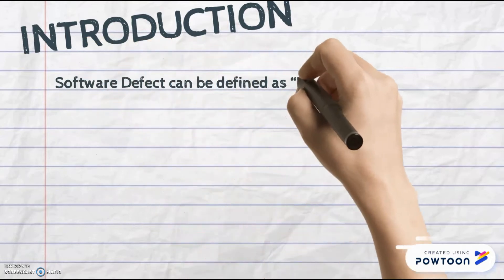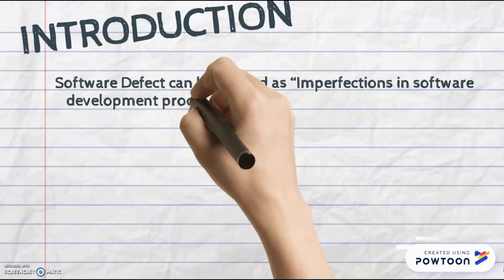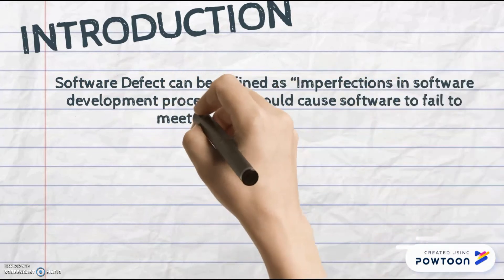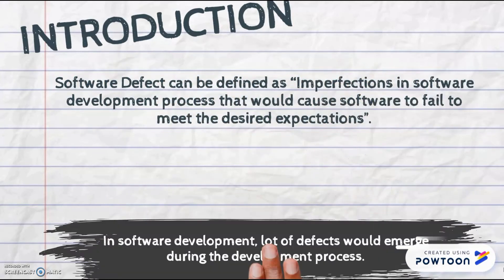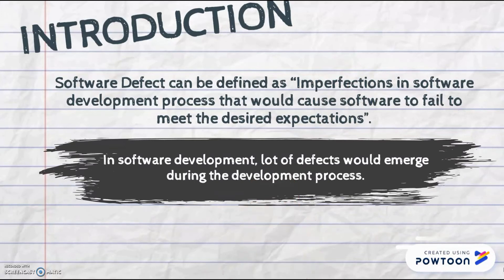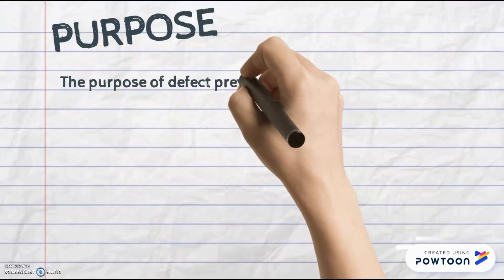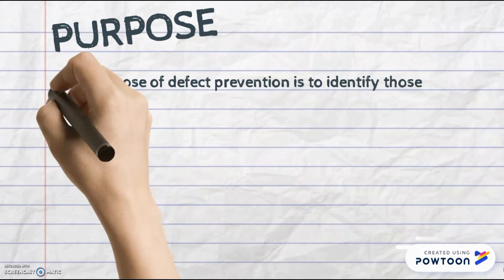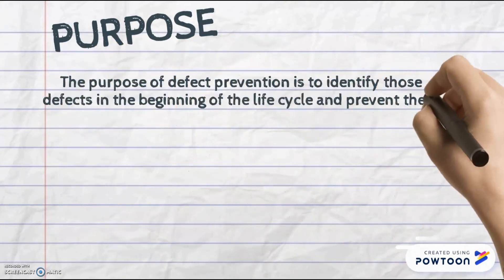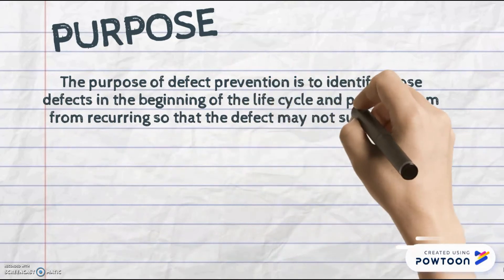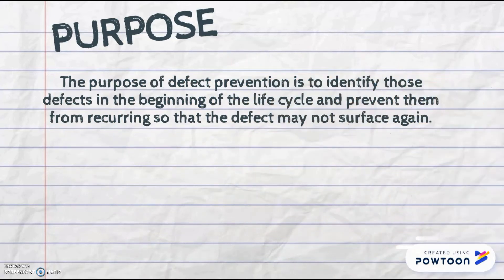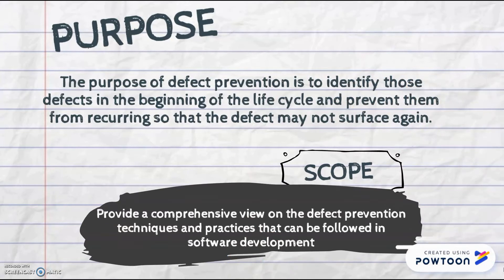Before we proceed, let us understand the meaning of software defect. A software defect can be defined as an imperfection in the software development process that will cause software to fail to meet the desired expectations. In software development, a lot of defects will emerge during the development process. The purpose of this article is to identify those defects at the beginning of the life cycle and prevent them from recurring. The scope of this article is to provide a comprehensive view of defect prevention techniques that can be followed in software development.